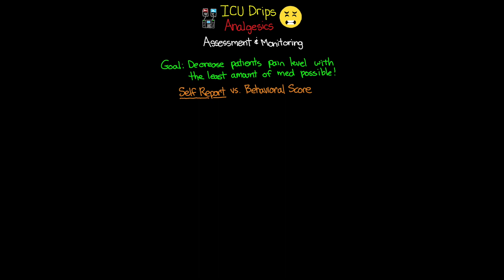The most common behavioral scoring system we typically see is called the Critical Care Pain Observation Tool, or CPOT. With the CPOT, we have a maximum score of 8 points. To get this score, we look at four different indicators and score each one either a 0, a 1, or a 2. These four indicators are: facial expression, body movement, muscle tension, and either vent compliance or vocalization.